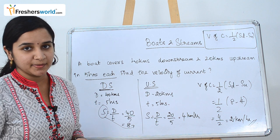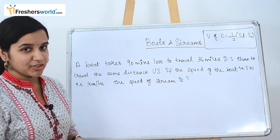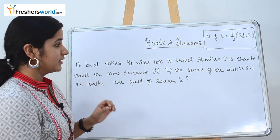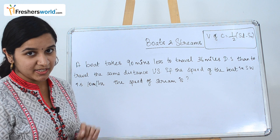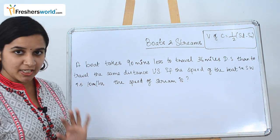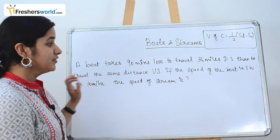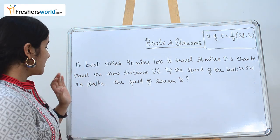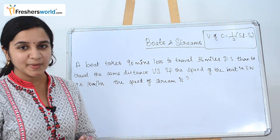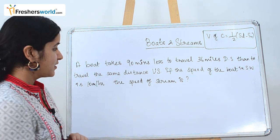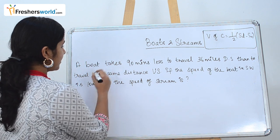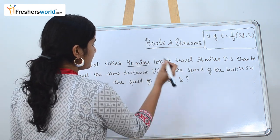The second question is: a boat takes 90 minutes less to travel 36 miles downstream than to travel the same distance upstream. If the speed of the boat in still water is 10 miles per hour, find the speed of the stream.